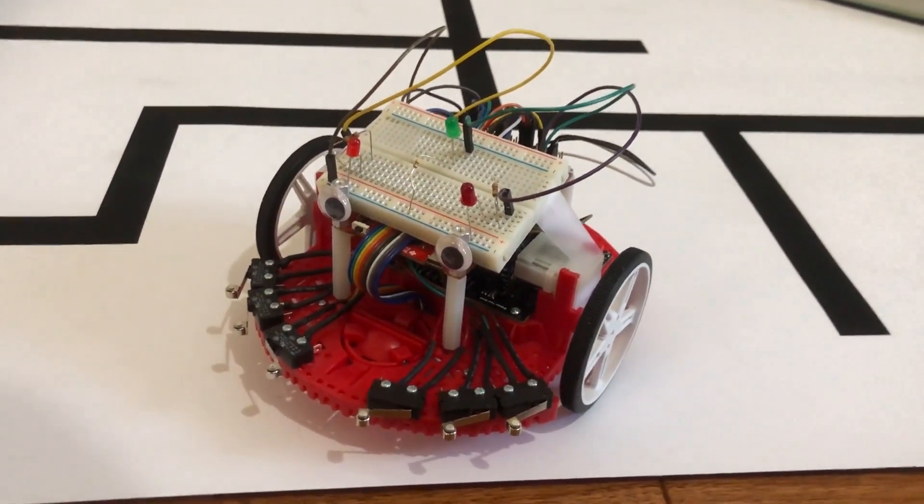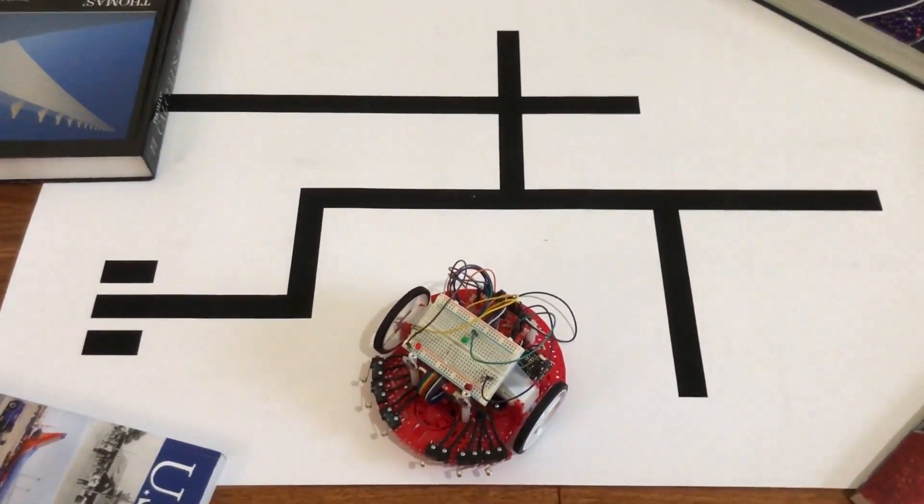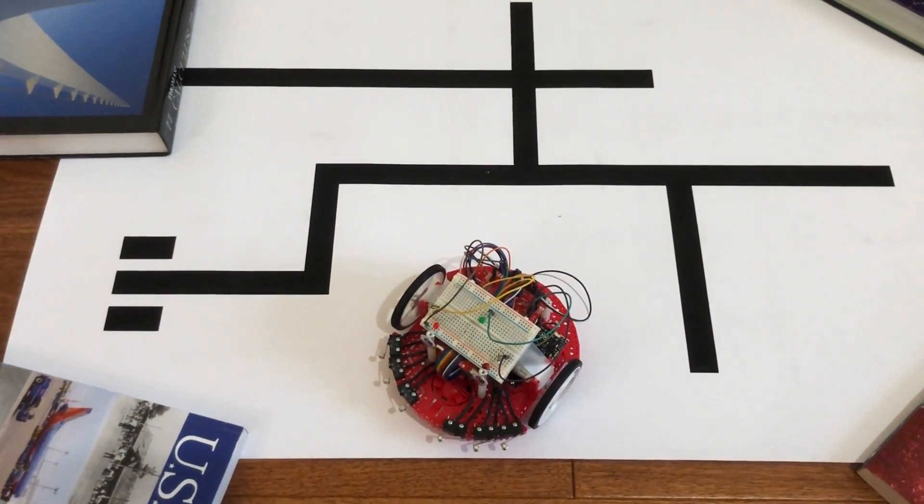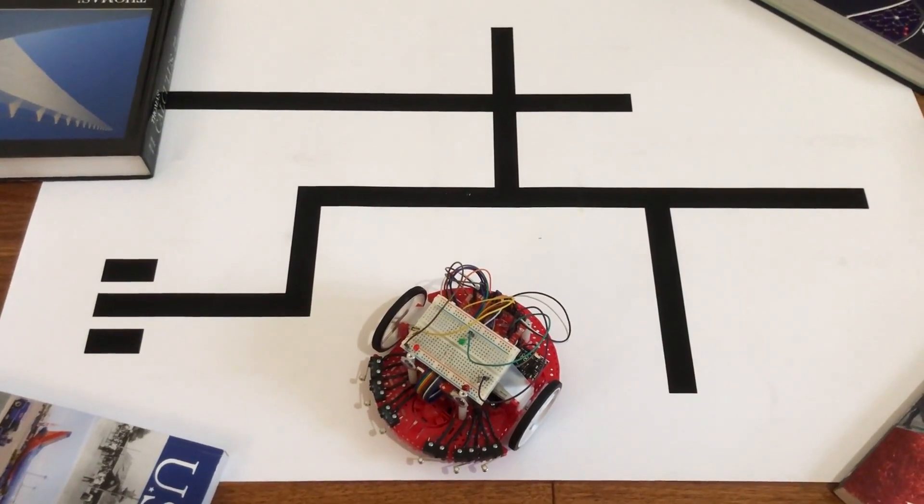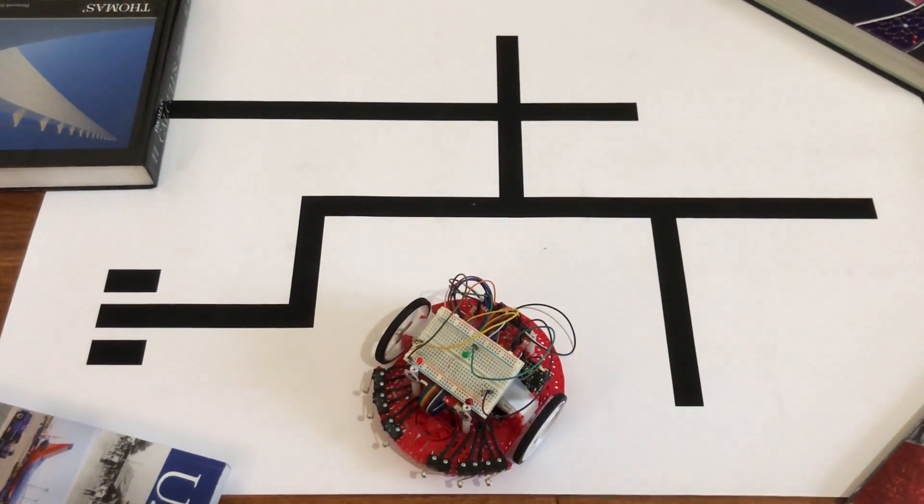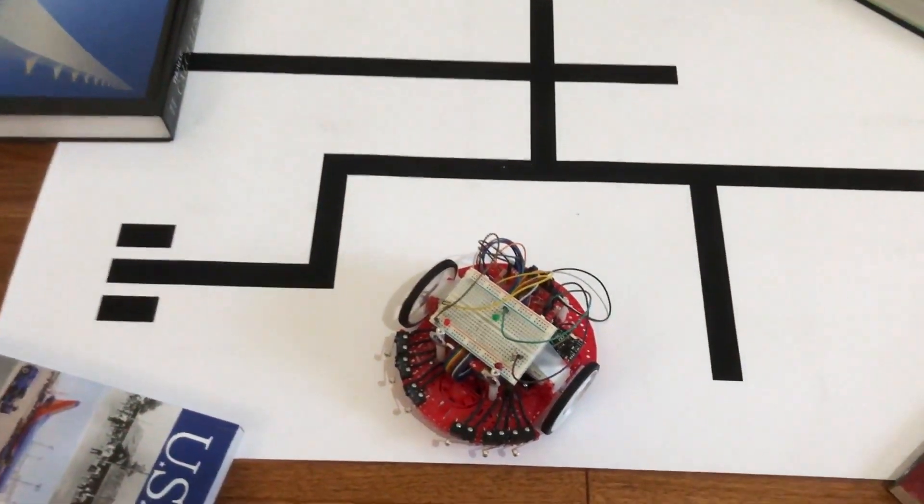This video is going to show you the robot solving this line maze once from an easy starting spot and once from a hard starting spot. Both times I'm going to show you that it can remember the shortest path to solve the maze as long as you put it back where you first put it, and that it doesn't have to go through the entire maze to solve it again after it has solved it once.